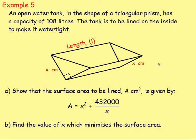Example five: an open water tank in the shape of a triangular prism has a capacity of 108 litres. The tank is to be lined on the inside to make it watertight. Part a: show that the surface area to be lined, A, is given by the given formula. Part b: find the value of x which minimizes the surface area.